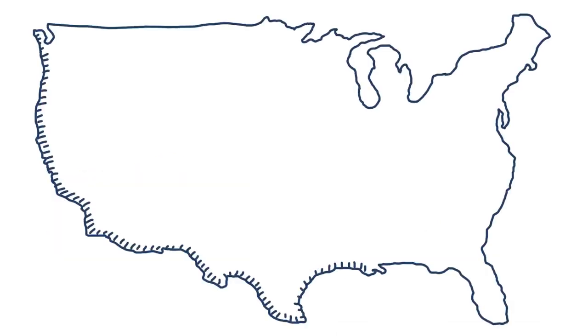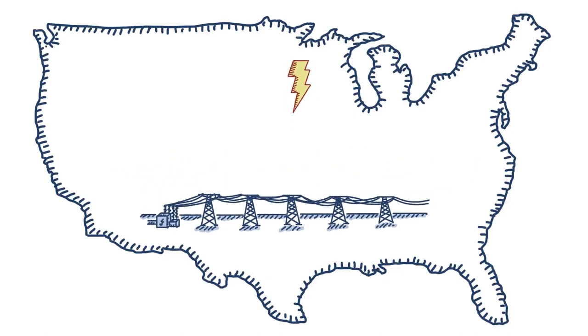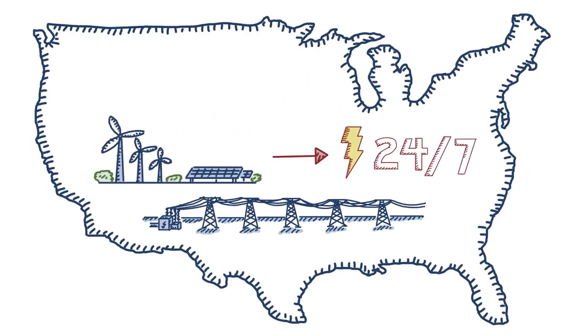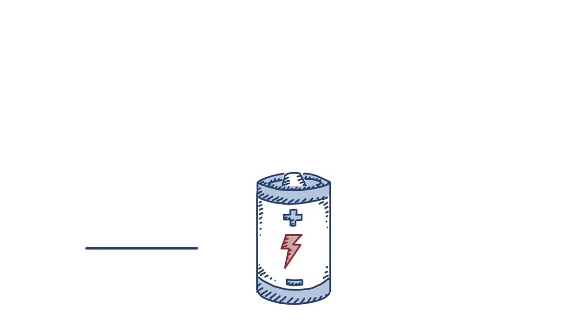Grid reliability is essential, which requires having enough electricity available every second of every day. As we run our grid with more variable sources like wind and solar, we must meet the challenge of maintaining 24-7 power. This is why we see storage technology as a real game-changer. We can deliver round-the-clock clean energy even when the sun isn't shining or the wind isn't blowing.